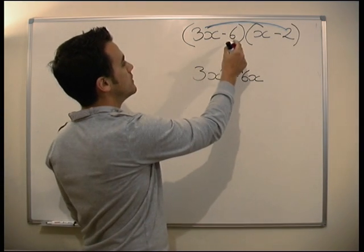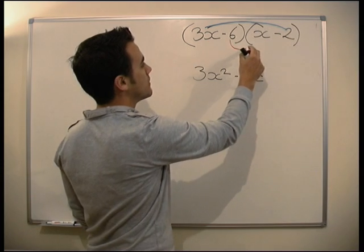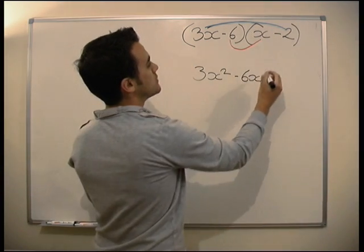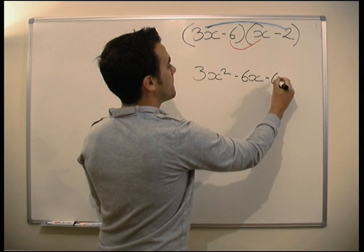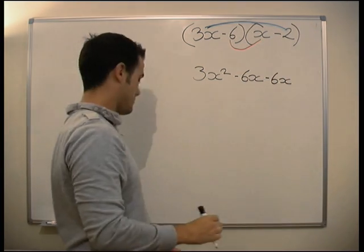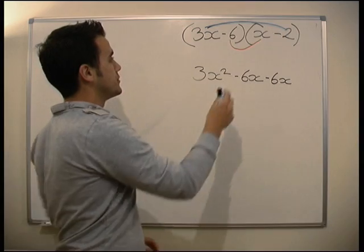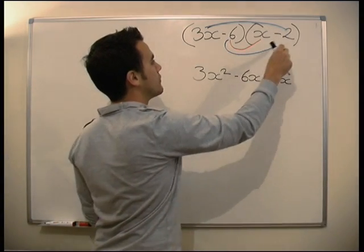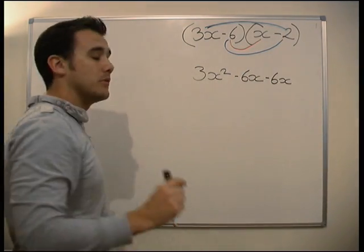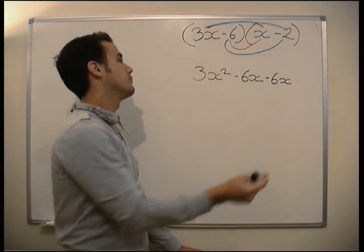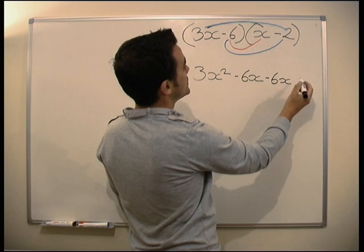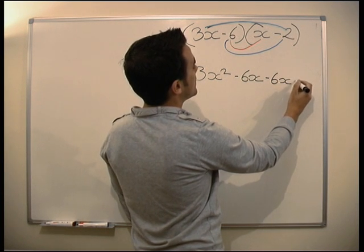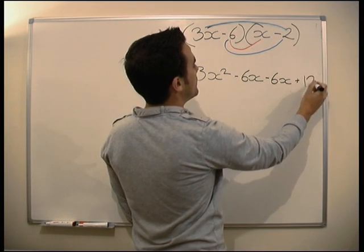We're now going to do the minus 6 times by the x, which gives us minus 6x. And last but not least, the minus 6 times by the minus 2. Minus and minus make a plus when we multiply, so minus 6 times minus 2 gives us plus 12.